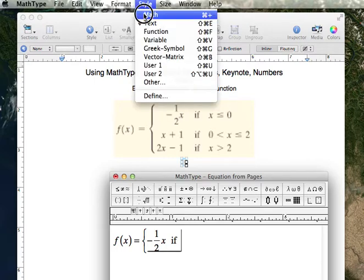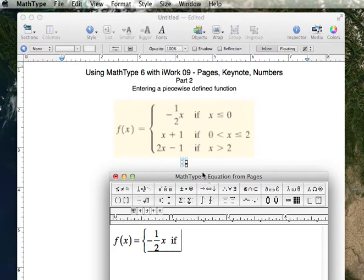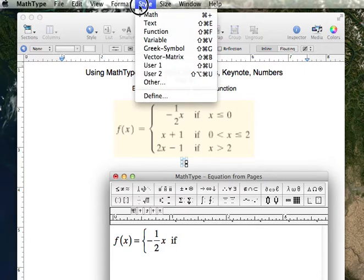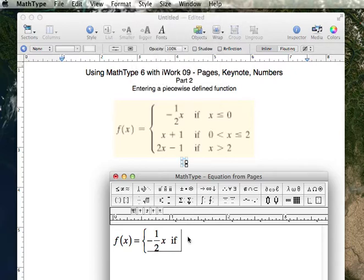go up to the style menu, switch back to Math, there are keyboard shortcuts for these things, so you can pay attention to those and use those if you want. If, let's see, x, the less than or equal to is right here, and then zero.